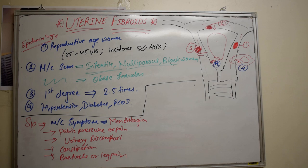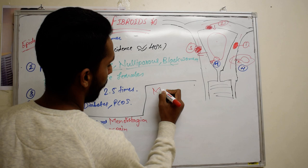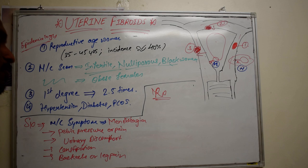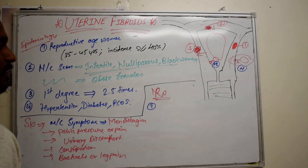Mostly fibroids are asymptomatic, but if symptoms appear, it will be one of those. Now let's talk about management or treatment. We have pharmacological options for treating fibroids which only help in decreasing the size of fibroids, but in order to treat fibroids, we always have to go for surgery. Let's first discuss the pharmacological drugs available.